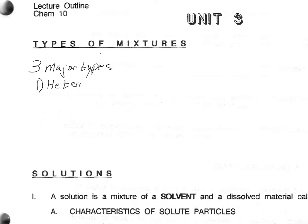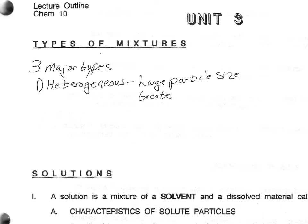Heterogeneous mixtures have a larger particle size to the point that you can actually see them under normal conditions. This particle size is generally greater than 100 nanometers in size.